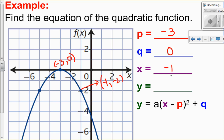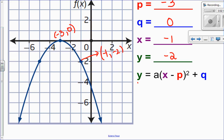So that means my X value is negative 1, my Y value is negative 2. So I'm going to plug in P, Q, X, and Y for the purposes of solving for A. So let's do that. So we have Y, negative 2, equals A times X, negative 1, minus P, which is negative 3, and then plus Q, which is 0. So let's tidy this up a little bit and solve for A.